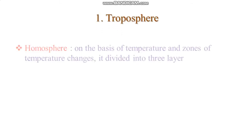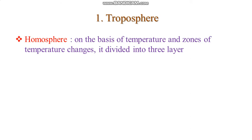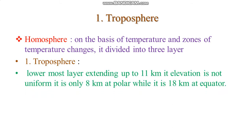On the basis of temperature and zones of temperature changes, the atmosphere is divided into layers. The first layer is the troposphere, which is the lowermost layer of the atmosphere, extending up to 11 km. This elevation is not uniform — it is only 8 km at the poles while it is 18 km at the equator.